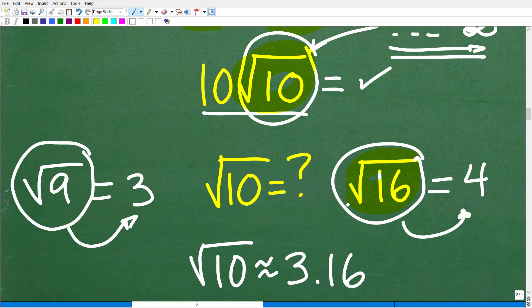Well, listen, 10 is pretty close to 9. And if the square root of 9 is 3.0, maybe the square root of 10 will be like maybe 3.1, 3.2. And actually, if you go into your calculator, it's approximately 3.16.